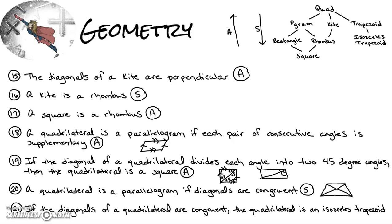Number twenty-one: if the diagonals of a quadrilateral are congruent, then the quadrilateral is an isosceles trapezoid. For the same reason, that's sometimes true — it could be an isosceles trapezoid, or it could be a rectangle, since in a rectangle the two diagonals are equal to each other and a rectangle is a type of parallelogram.